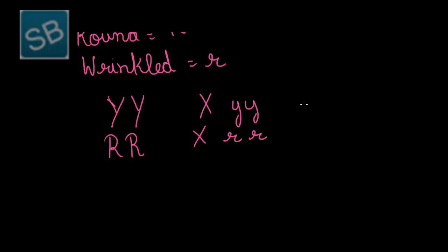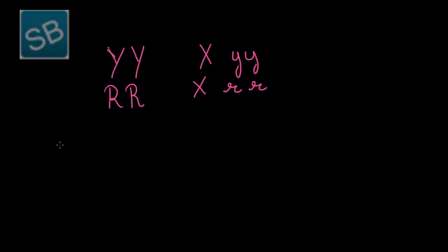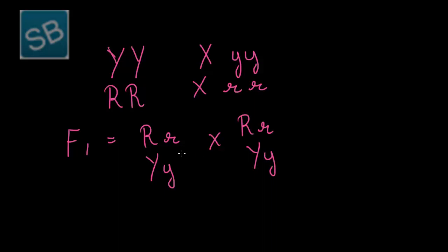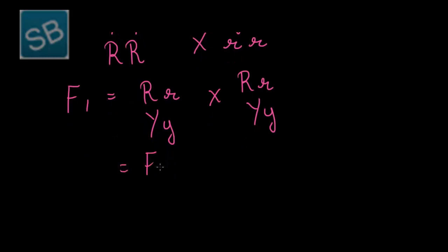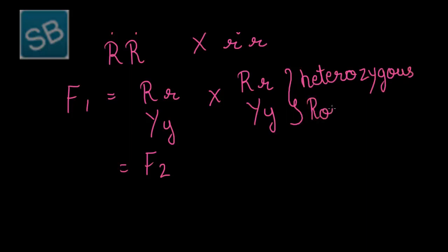Mendel selected pure breeding yellow and round seed producing plants. The F1 generation obtained was heterozygous, yielding round and yellow seeds.